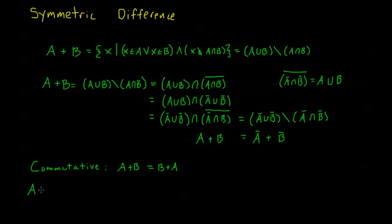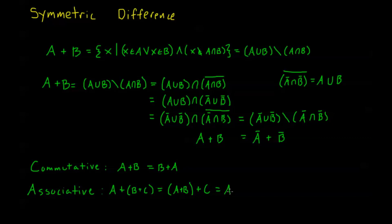We also have an associative law: the symmetric difference between A and the symmetric difference of B and C is equal to the symmetric difference between A and B, taking the symmetric difference of that with C. We can perform the symmetric difference in any order. In fact this is just A symmetric difference B symmetric difference C — all of the elements that are in exactly one of these sets but not in the intersection of any of the sets.